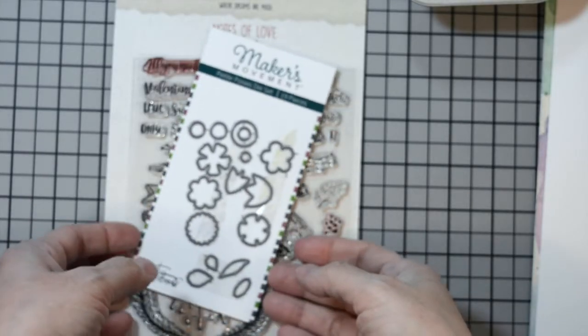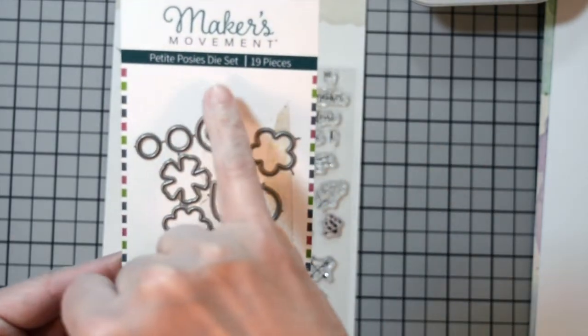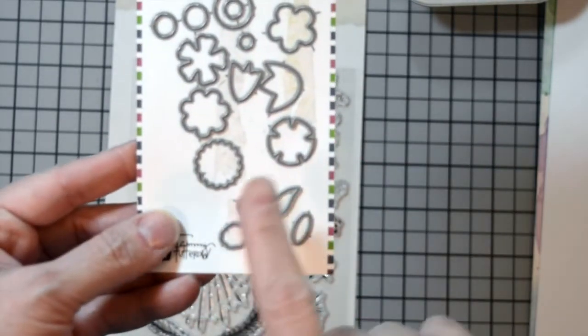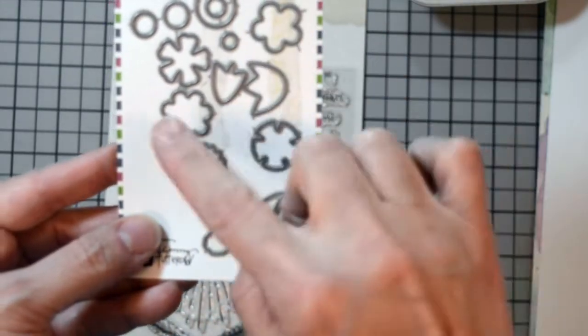Let's go over the products we'll be using. The Maker's Movement Petite Posies Die Set. This die set contains four leaves, a variety of flowers, and several centers to the flowers.